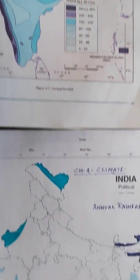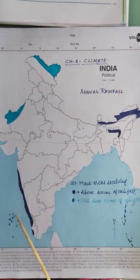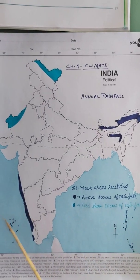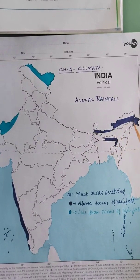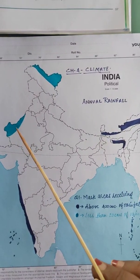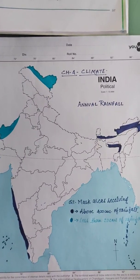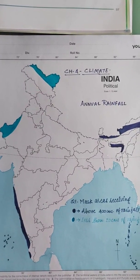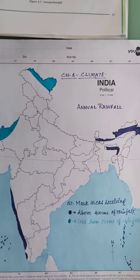I have made a simplified map for you. Don't forget to identify the Andaman and Nicobar Islands and the Lakshadweep Islands, where rainfall is more than 400 centimeters. Observe the parts receiving more than 400 centimeters and only two parts receiving less than 20 centimeters. These will come for identification — they will mark these areas and ask you to identify what amount of rainfall these areas are receiving.